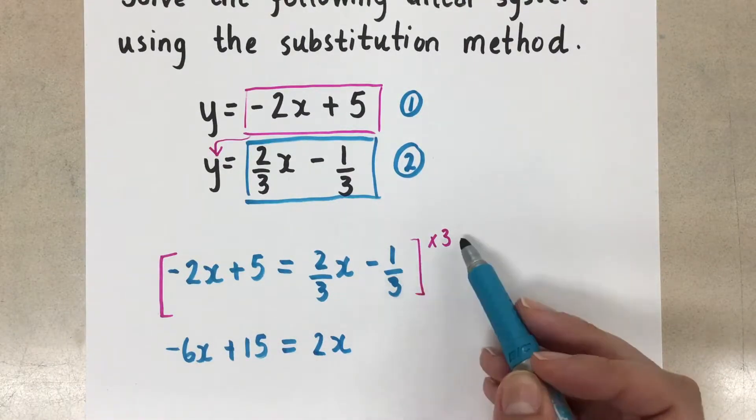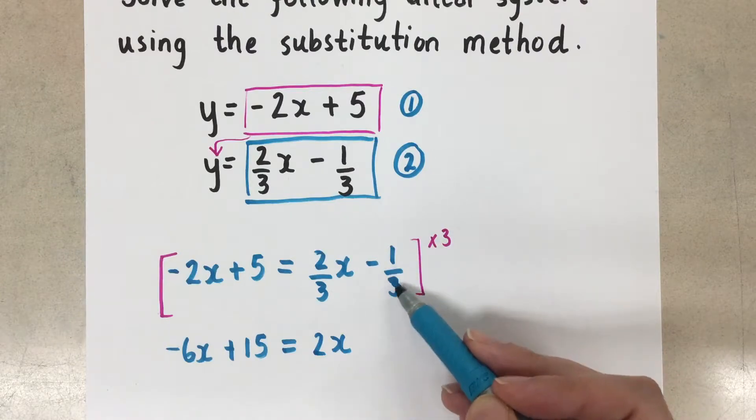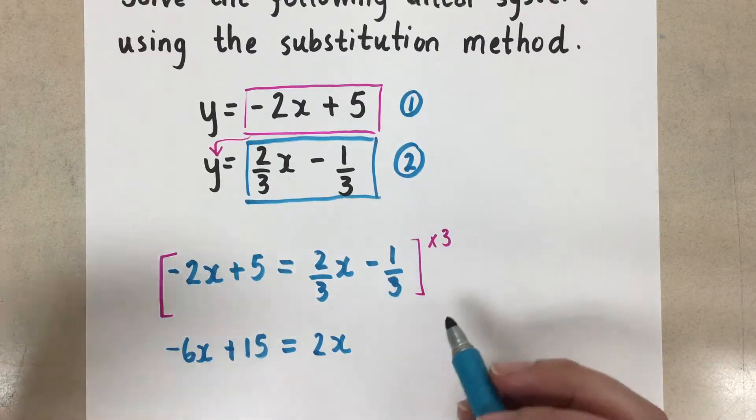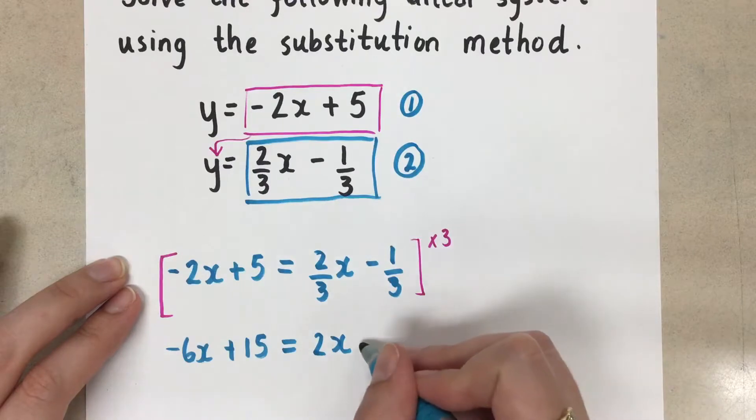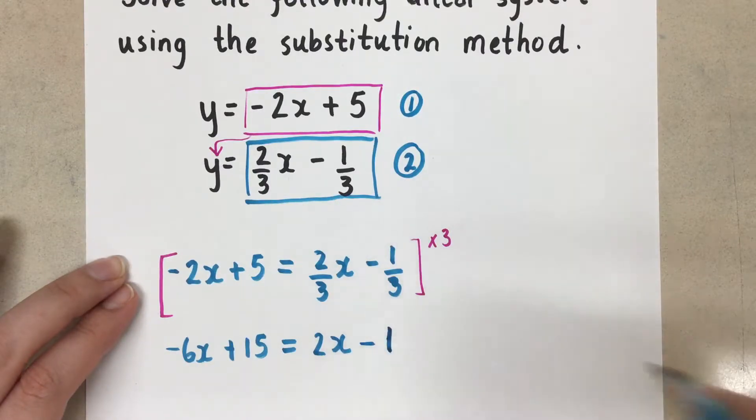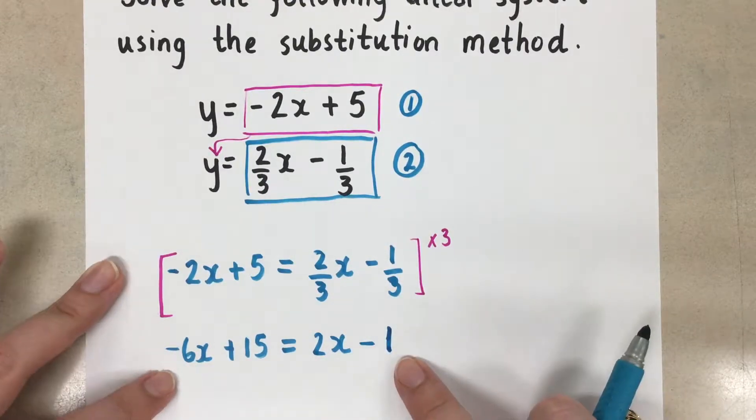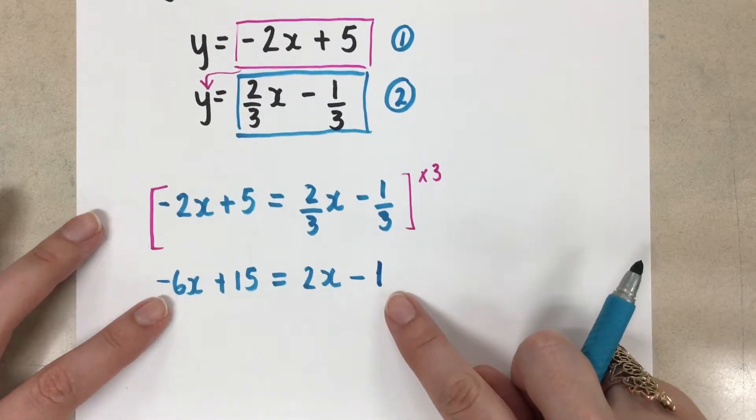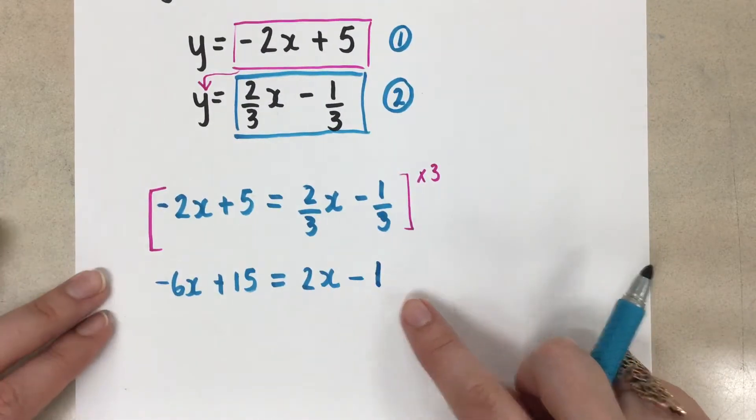And then same thing here, minus 1 third times 3. Well, if we have divided by 3 and times 3, those are inverses of each other, so we get minus 1 here. And so now we have an equation to solve with no fractions, and I think that's usually a little simpler for people to deal with.